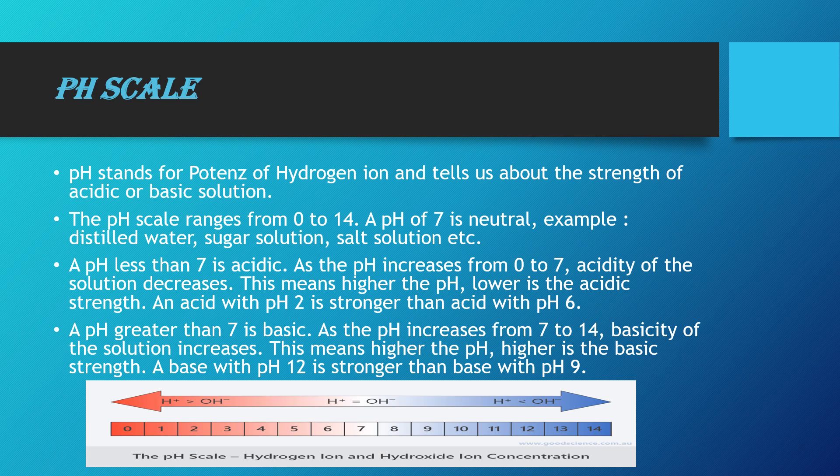Next is the pH scale. Remember: p is small and H is capital. pH stands for 'potency of hydrogen ion' and it tells us about the strength of acidic and basic solutions. The pH scale ranges from 0 to 14, as shown in the figure. pH 7 in the middle is a neutral solution. pH from 0 to less than 7 are acidic solutions, and pH from 8 to 14 are called basic solutions. More the pH, more will be the basic character; less the pH, more will be the acidic character.